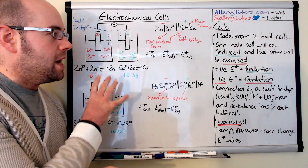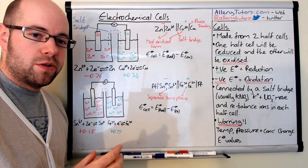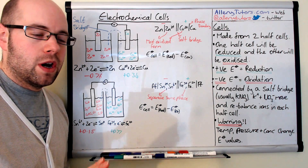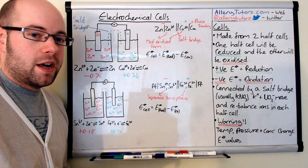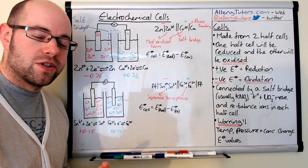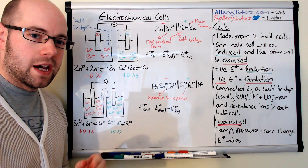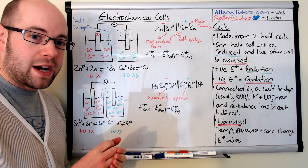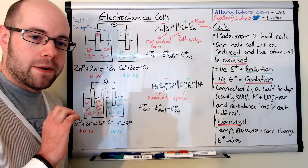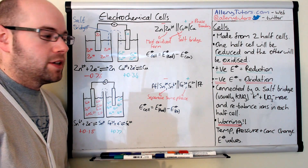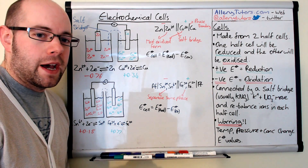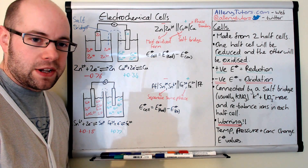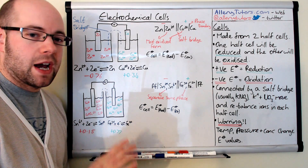You've got to be careful that any values we're using here assume standard conditions. That means 298 Kelvin, 100 kilopascals of pressure, and concentrations of any solution used are 1 mol per dm³. It's very difficult to get the exact values, and you'll find that when you do these practically your values will differ from theory. There will be another video in this playlist looking at the effects of concentration and temperature on these reactions.